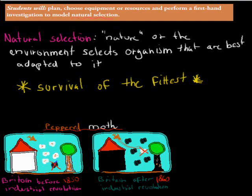In this video we're going to talk about the next syllabus dot point, which says students will plan, choose equipment or resources, and perform a first-hand investigation to model natural selection.